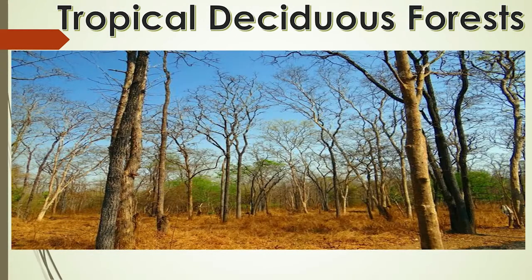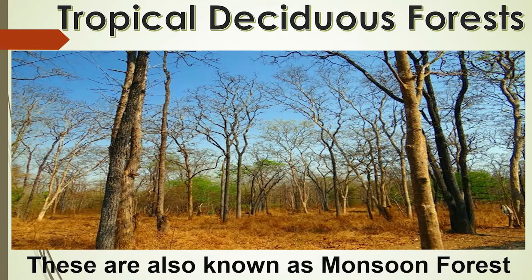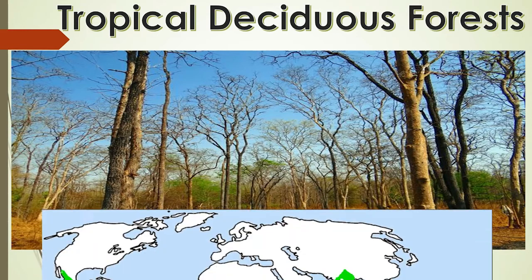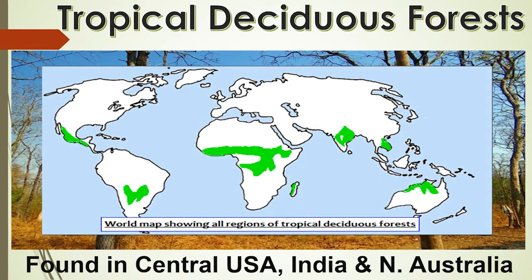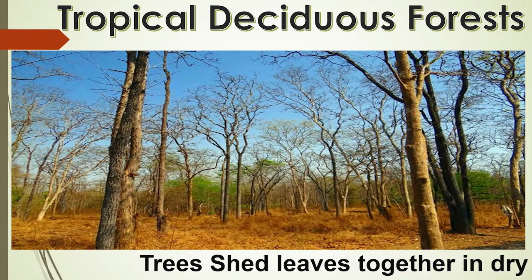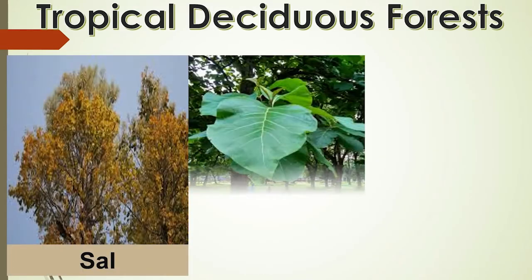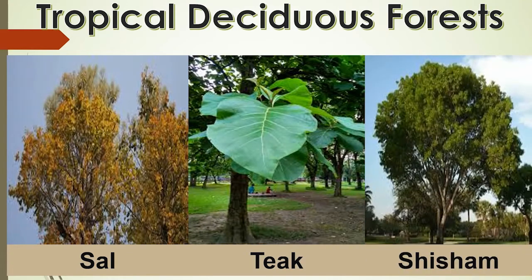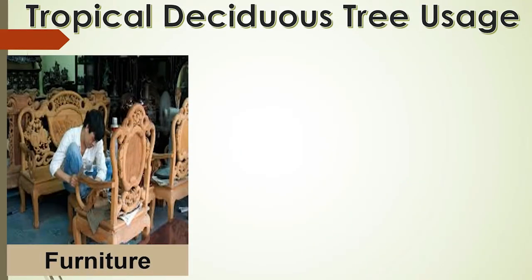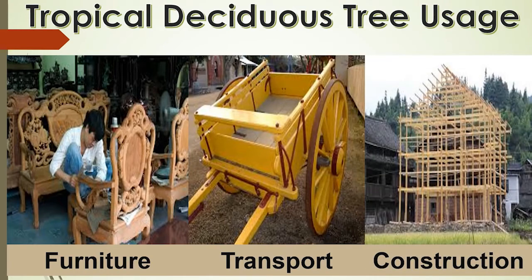Tropical deciduous forests are also called monsoon forests and are found in large parts of India, northern Australia and in central America. These regions experience seasonal changes. Trees shed their leaves in the dry season to conserve water. Sal, teak, neem and shisham are hardwood trees found in these forests. These trees are very useful for making furniture, transport and other constructional materials.